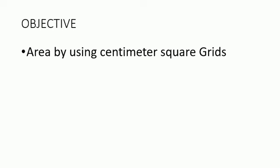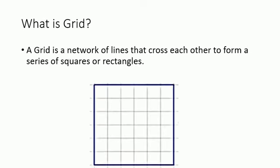What is a grid? A grid is a network of lines that cross each other to form a series of squares or rectangles, just like the example given here.